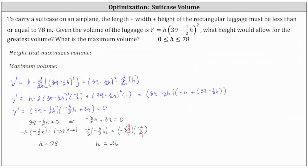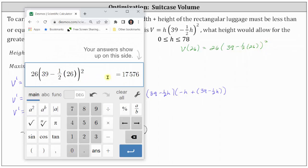Going back to our first slide, we record the height that maximizes the volume as h equals 26 inches. We verify the maximum volume by evaluating the volume function at h equals 26: v of 26 equals 26 times the square of (39 minus one half times 26), which gives us the same maximum volume as the graph — 17,576 cubic inches.